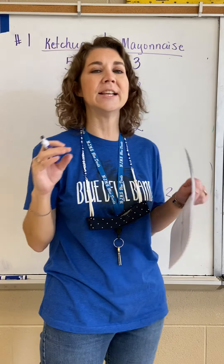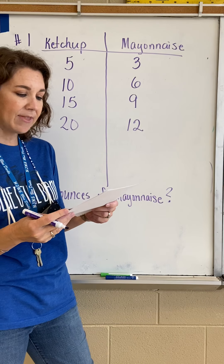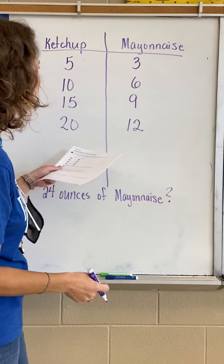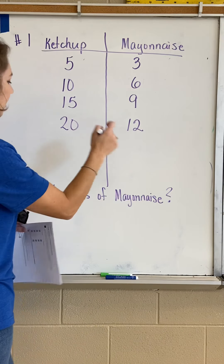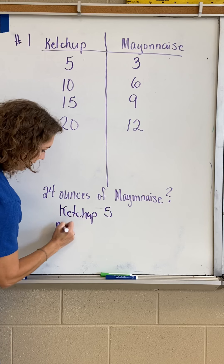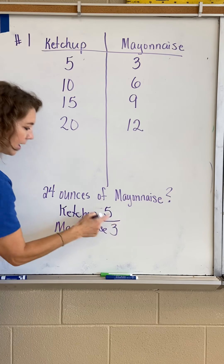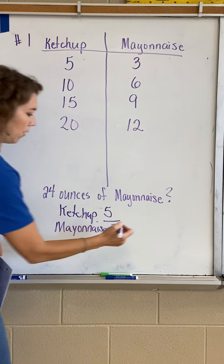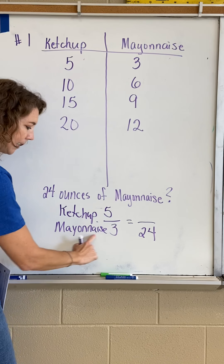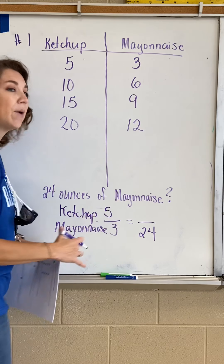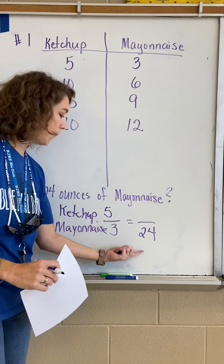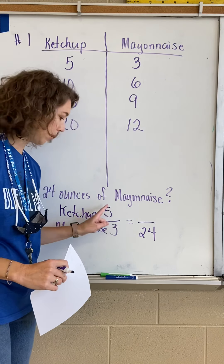Part B says how many ounces of ketchup would Beefy Burger need if they use 24 ounces of mayonnaise? I look at this chart and I look at the ratio of ketchup — five — to mayonnaise — three — and I can make a ratio out of those two numbers. If I want 24 ounces of mayonnaise, I put the 24 on the bottom because mayonnaise is on the bottom. Now I have a proportion, because I have a ratio equal to another ratio.